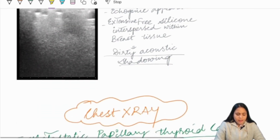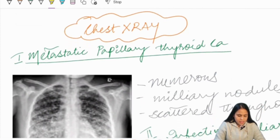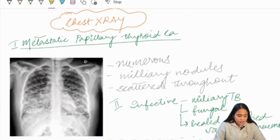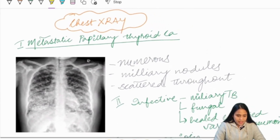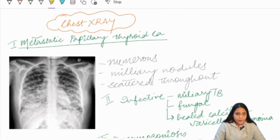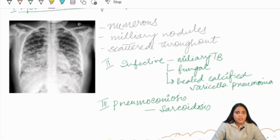Next, moving to the chest X-ray — very typically it is metastatic papillary thyroid cancer giving rise to miliary metastasis. Numerous miliary nodules can be seen scattered throughout the lung parenchyma. Other less common causes include infective miliary TB, fungal infections, actinomycosis, histoplasmosis, healed calcified varicella pneumonia, and pneumoconiosis — all of which can give miliary opacities throughout the lung parenchyma, which we designate as a snowstorm chest X-ray.